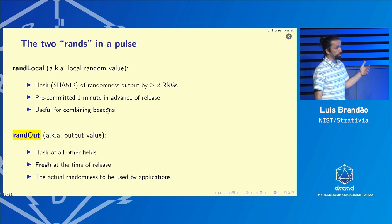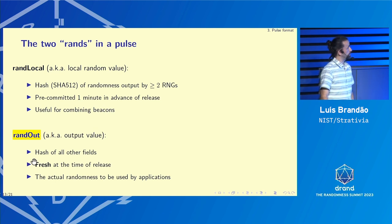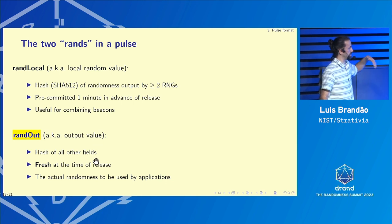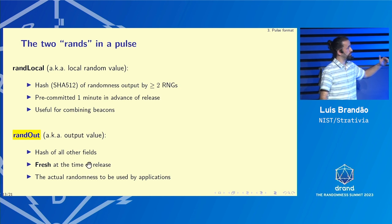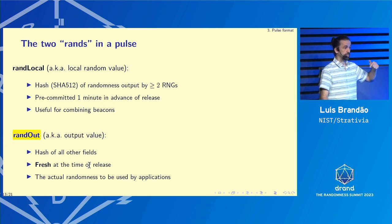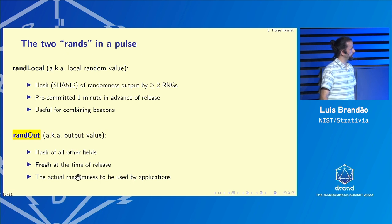Then we have the actual random output value, which is a hash of all other fields including the signature, timestamps, and indices. It's fresh at time of release — actually fresh within seconds — because even though the local random value that will show is from a minute before, it also hashes the pre-commitment of the next local random value, which was just selected. This is the actual randomness that should be used by applications.